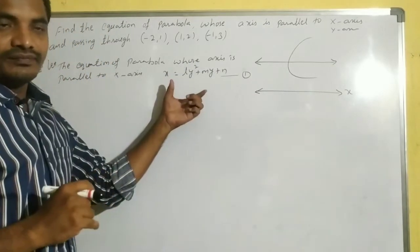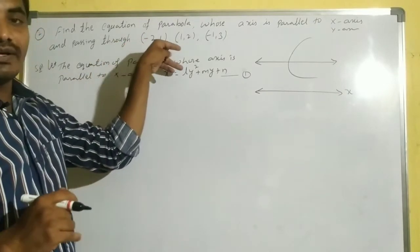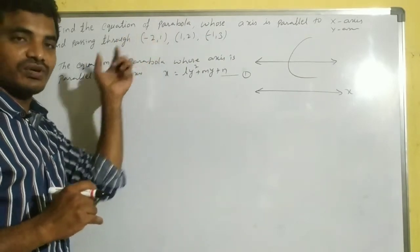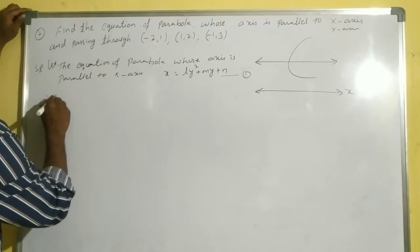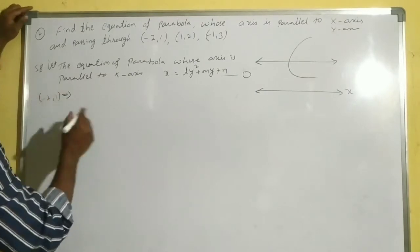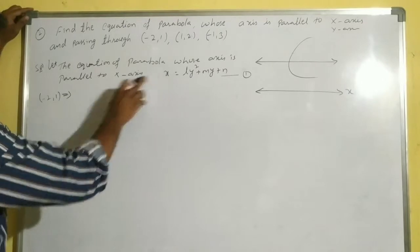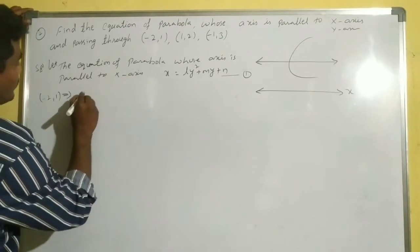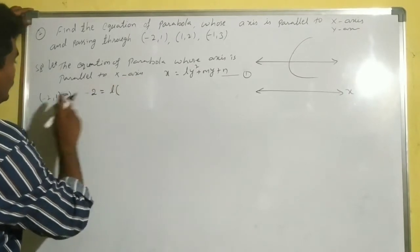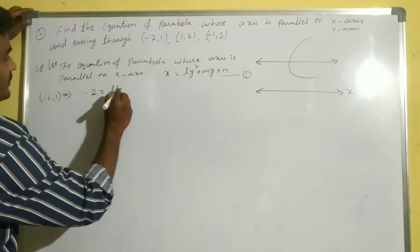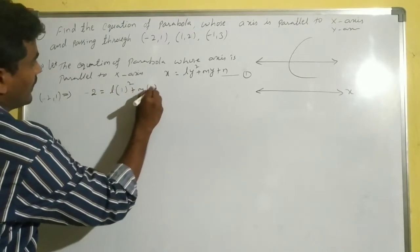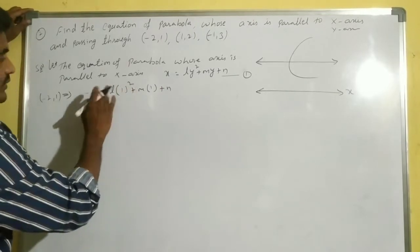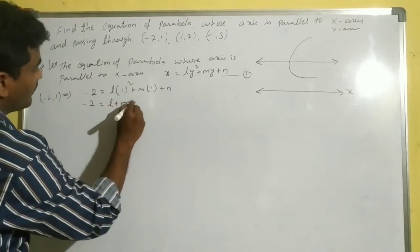This parabola is passing through (-2, 1), (1, 2), and (-1, 3). Substituting (-2, 1): x = -2, y = 1, so -2 = l(1)² + m(1) + n, giving -2 = l + m + n. Say this is equation number 2.